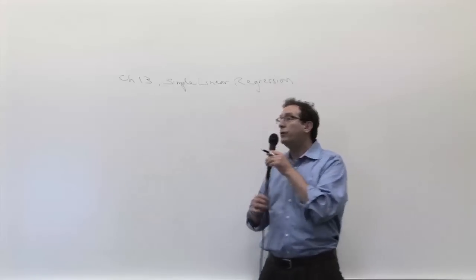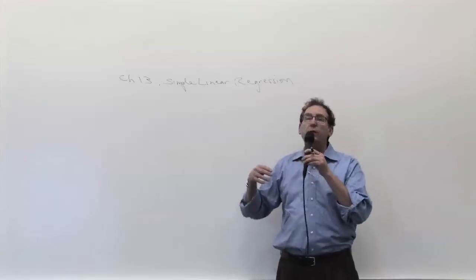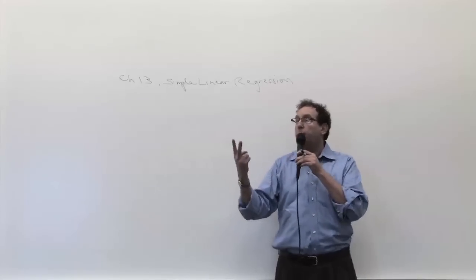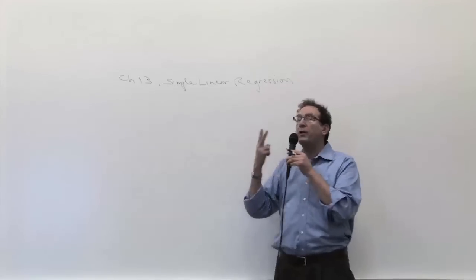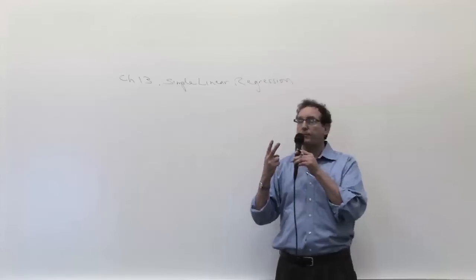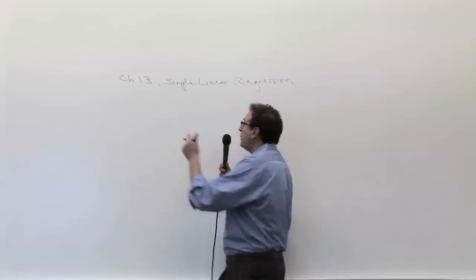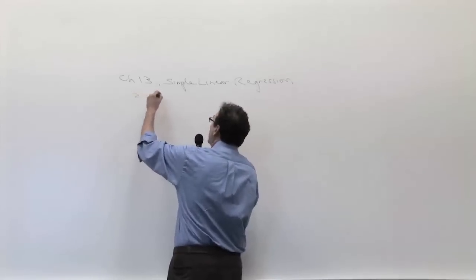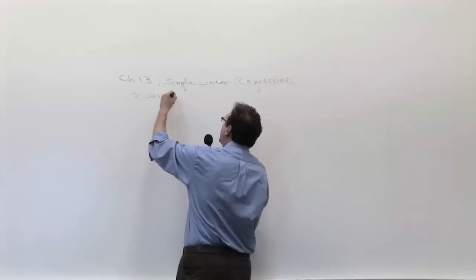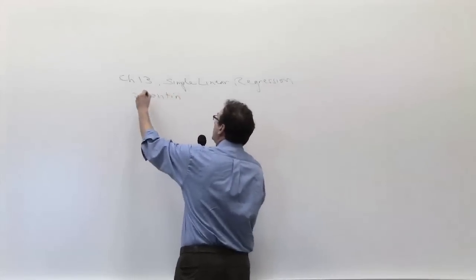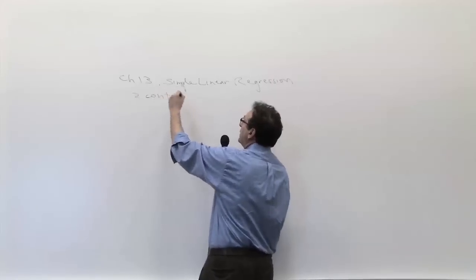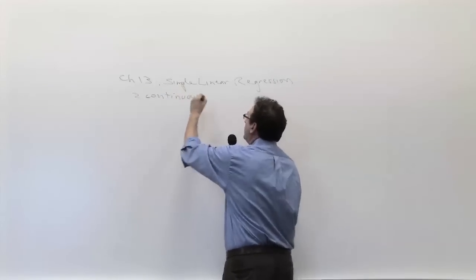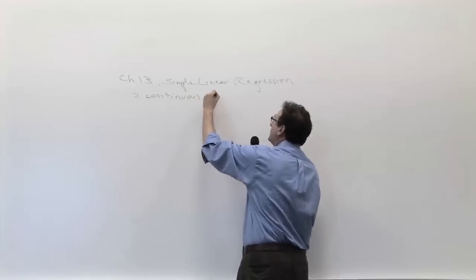In Chapter 13, we move into two variables again, but this time they're both continuous. So we have two continuous variables.